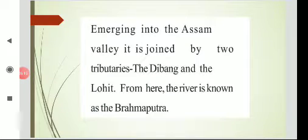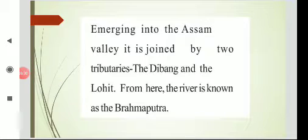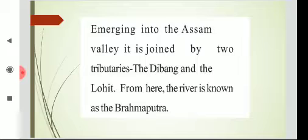This river then emerges into the Assam valley, where it is joined by two tributaries — Dibang and Lohit. When Brahmaputra enters into Assam, it is called Sedong. After the two tributaries Dibang and Lohit join with it, the combined stream is then known as Brahmaputra.